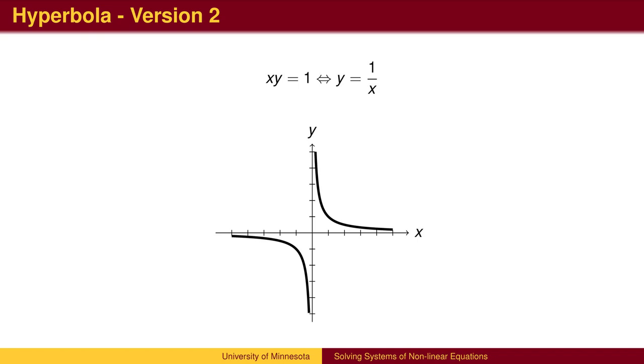One other fact before we start is the graph of xy equals 1, which can be transformed into y equals 1 over x. This graph is a hyperbola, which has been rotated 45 degrees, so the asymptotes are the x and y axes.